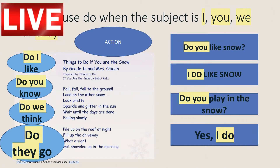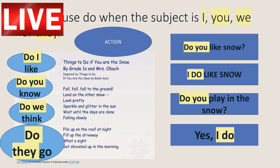We use the word 'do' when the subject is I, you, we, or they, and it's about action — when you do something. We can also use it to begin a question. For example, 'Do you like snow?' The answer could be 'I do like snow', or just 'I do', because when somebody knows what you're talking about, the verb 'do' indicates the action.